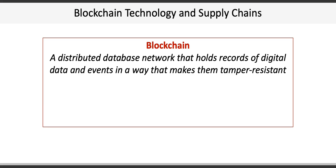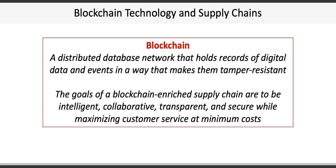Blockchain is for more than just Bitcoin. The goals of a blockchain-enriched supply chain are to be intelligent, collaborative, transparent and secure, while maximizing customer service at minimum cost. For example, De Beers uses blockchain technology to track diamonds from the point of origin to customers to ensure that the company avoids conflict diamonds and assures customers they are buying the genuine article.